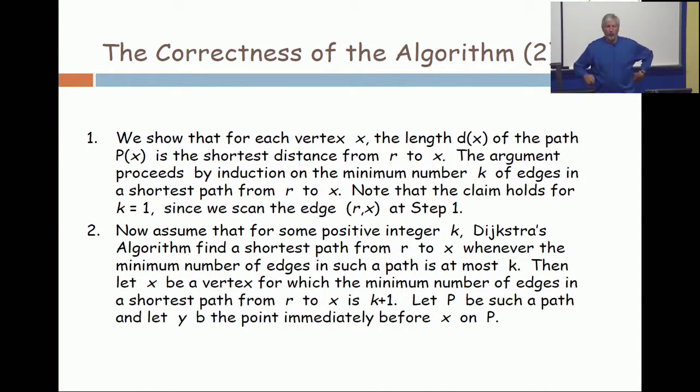All right, so the next step is to just do the inductive step. Assume that the optimum path has k plus 1 edges in it, just counting the number of edges, where k is greater than or equal to 1.